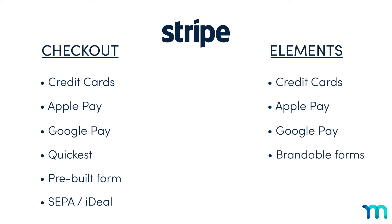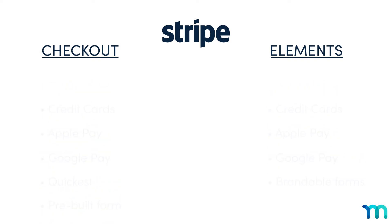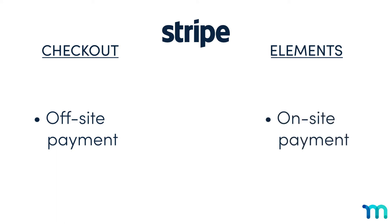Stripe Elements, on the other hand, lets you design a custom payment form to fit the look of your site, though there is a default look as well. The most important difference between the two is where the payment takes place. Stripe Checkout takes users off-site to pay on Stripe.com, whereas with Stripe Elements, users can pay right on your site.